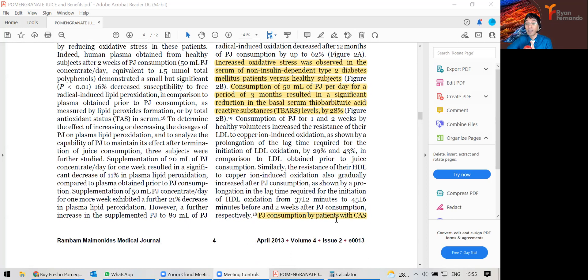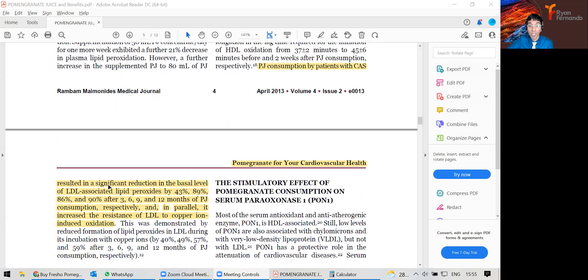In carotid artery stenosis, pomegranate consumption by these patients resulted in a significant reduction in the basal level of LDL-associated lipid peroxidases by 43 percent, 89, 86, and a whopping 90 percent after 12 months.